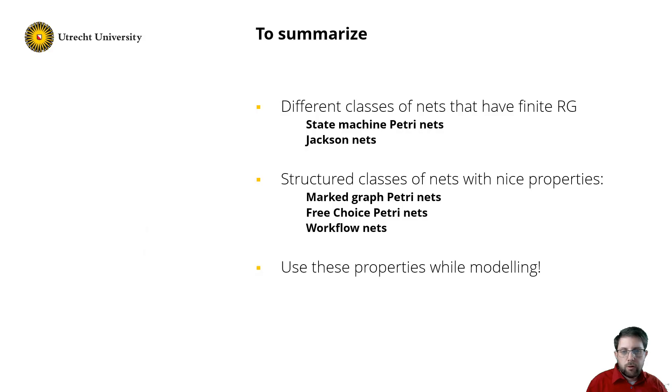So to conclude, we have seen different classes of nets that have finite reachability graphs, namely state machine Petri nets and Jackson nets. We have also seen structured classes of nets with nice properties, marked graph Petri nets and free choice Petri nets. And there is a special class called workflow nets that we use a lot in business process modeling. So use these properties while modeling, take your advantage of them. Good luck modeling!